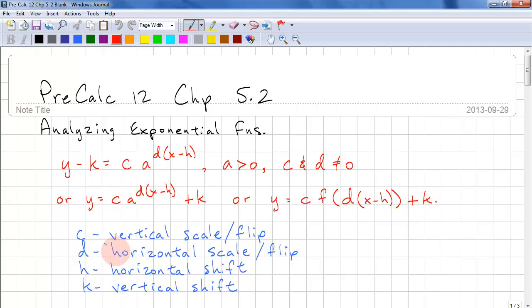Here c is for vertical scaling and flipping, d is for horizontal scaling and flipping, h is the horizontal shift, and k is the vertical shift. This looks exactly like the transformations for polynomials. However, we've replaced c for a and d for b because a is the base for our exponent, so we can no longer use a for vertical scaling.